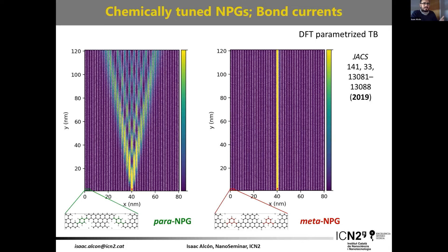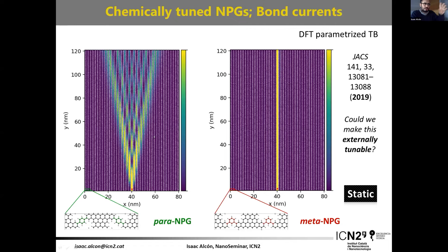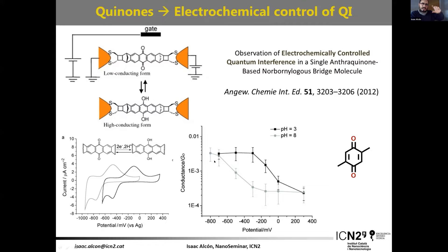The problem with these two materials is that they are static — if you want confinement you have to synthesize a new material. So the next question we asked was whether one material could have both properties on a single platform, tunable with an external knob. For that we thought about quinones, because quinones host quantum interference, as shown in single molecule devices. By electrochemical reduction or hydrogenation, this quantum interference is removed, allowing conductance to be tuned by varying pH.